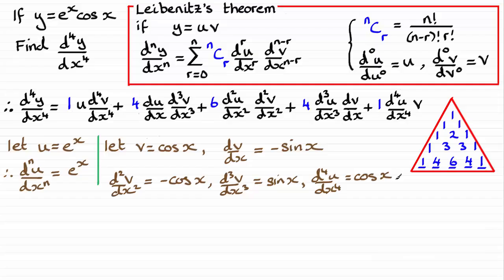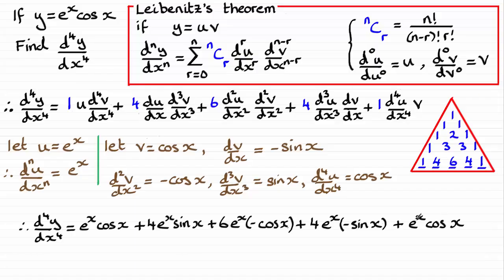So there's all our values. So now all we need to do is just substitute these results into our formula. And if you do that, you'll get this result here. And you'll notice that the 4e to the x sine x cancels out with the minus 4e to the x sine x, and just leaves the e to the x cos x terms to group together. And if you do that, you'll end up with minus 4e to the x cosine x.